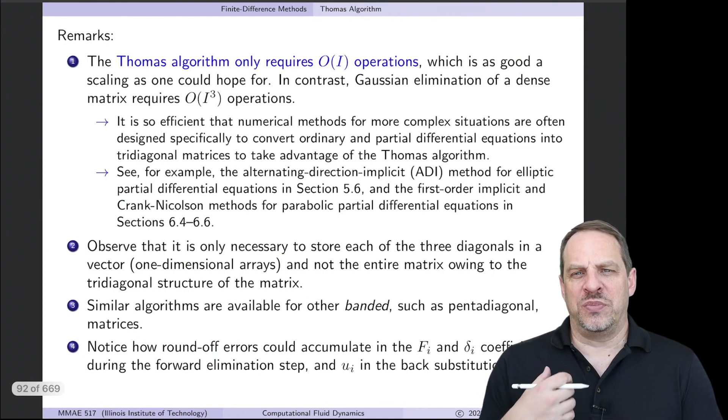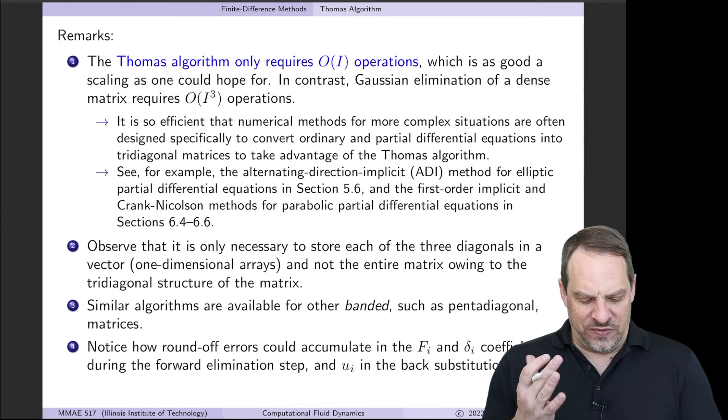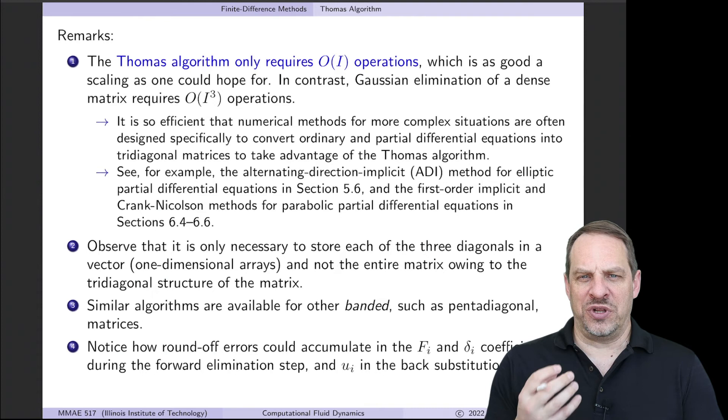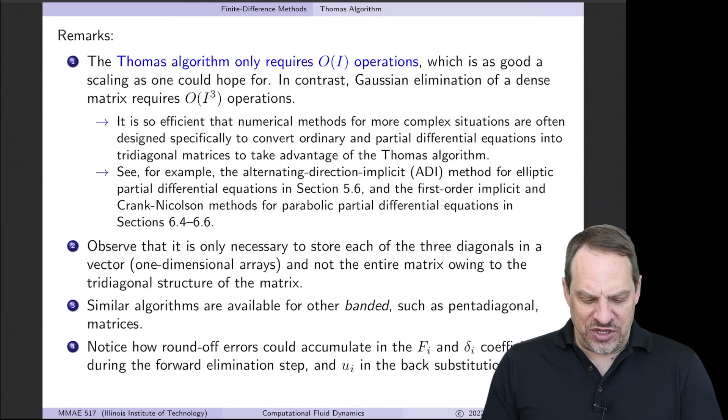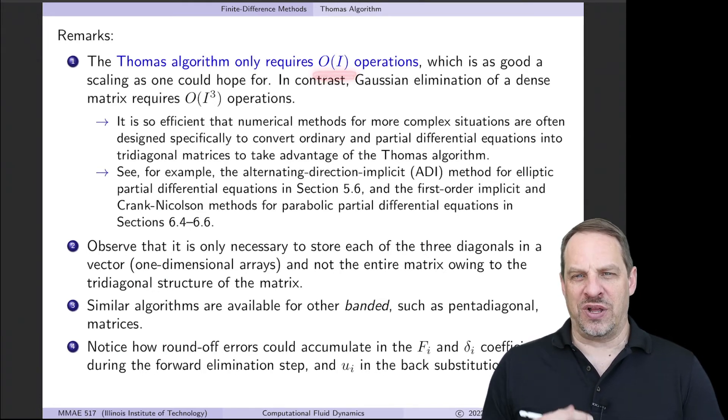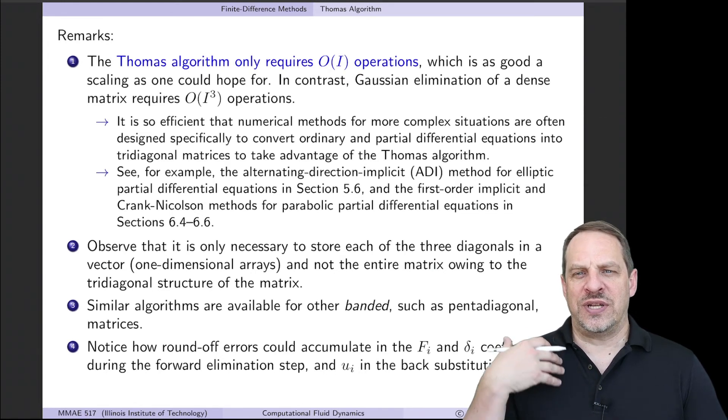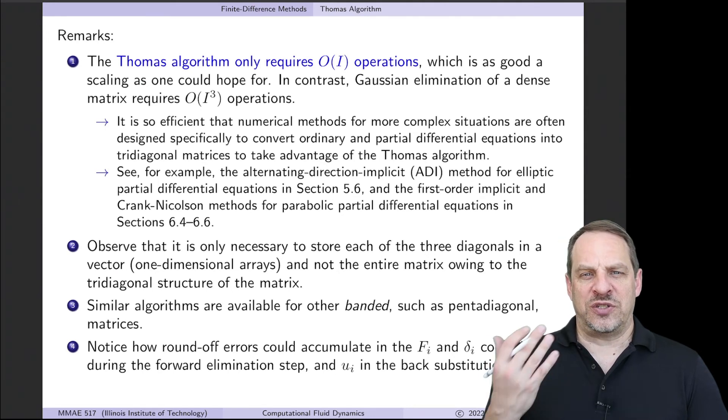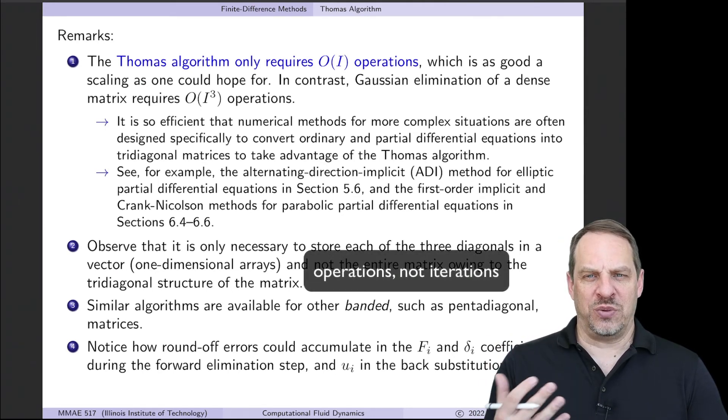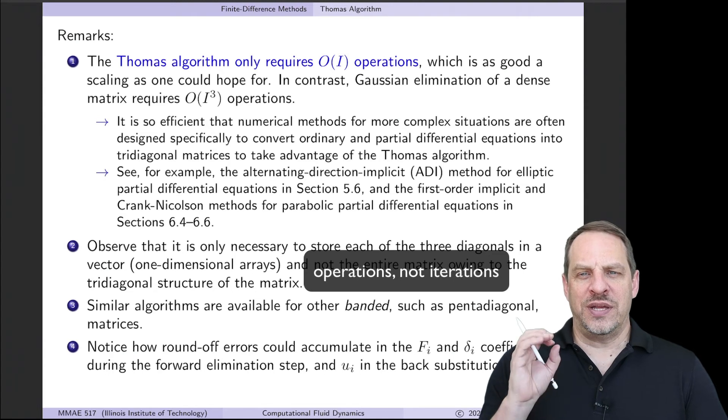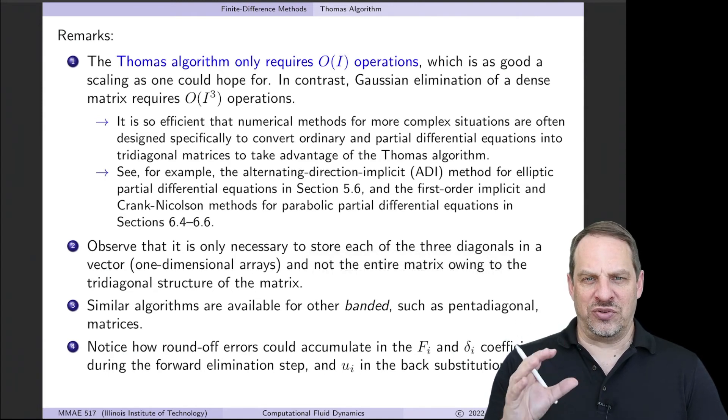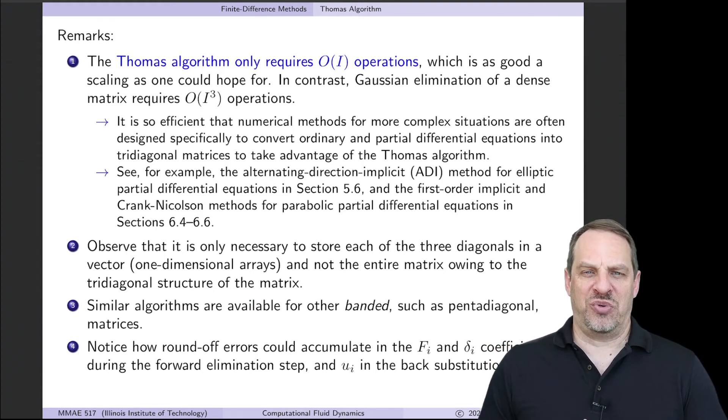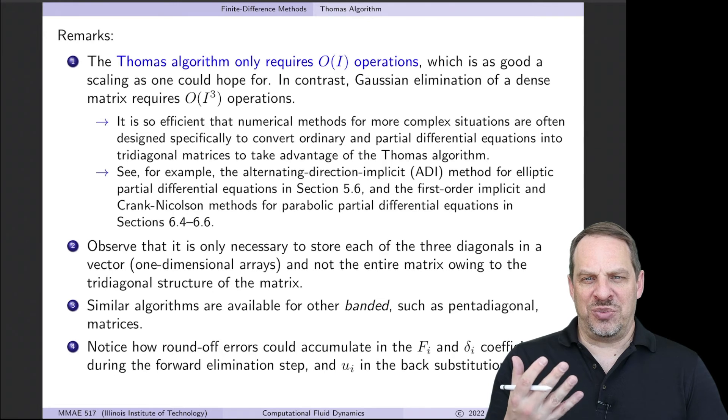So let me finish with some comments and remarks about the Thomas algorithm. First of all, the thing that we care about most is how efficient is it really when we implement this on a computer. It turns out that it only requires order capital I operations. So that's the best scaling we could hope for. Linear scaling is the best we can hope for. Double the size of the problem, double the number of iterations that we would have to perform. Gauss elimination on a general dense matrix requires capital I cubed operations. So as the size of the matrix goes up, if I were to double the number of unknowns, that would increase by a factor of 8, the number of operations and the computational time that I would have to wait to get the solution.